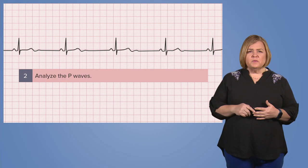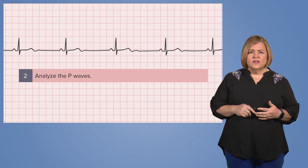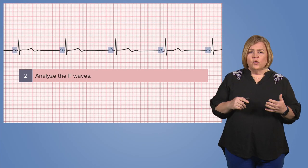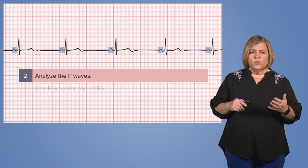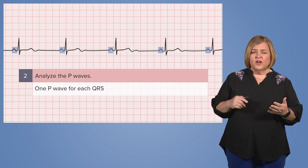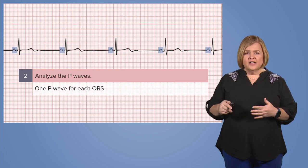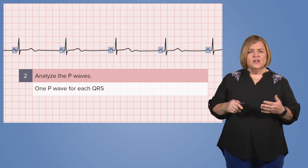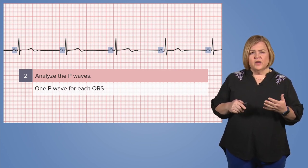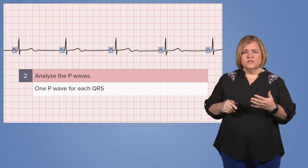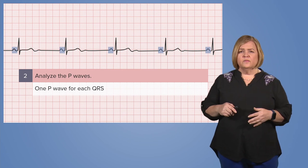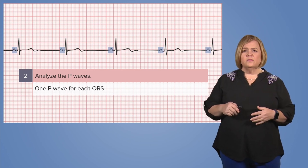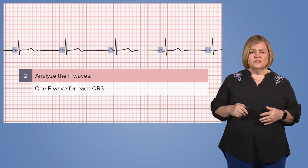Now let's look at the P waves. Are they all there? Do we have one P wave for every QRS? We do. Do the P waves all look the same? They do. Excellent.